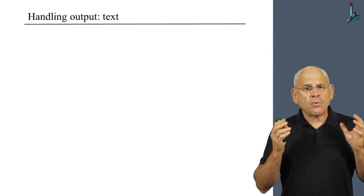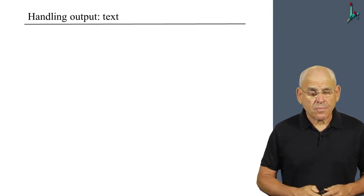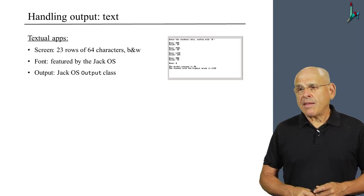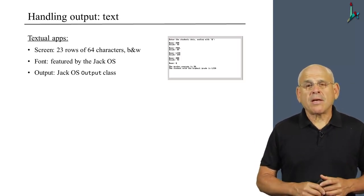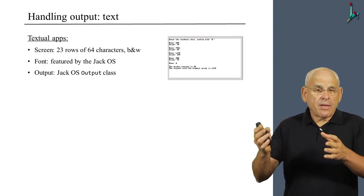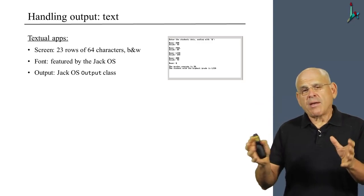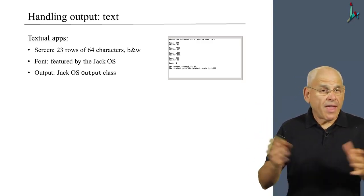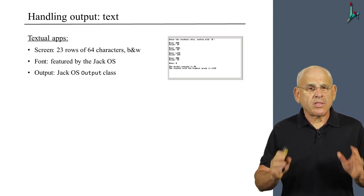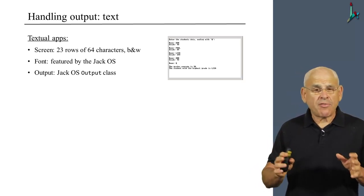Now, how should you handle input and output? Well, it depends on what you want to do. If you're developing a textual application that deals with simple characters and strings, then you should view the screen as a grid consisting of 23 rows, each of 64 characters, black and white.